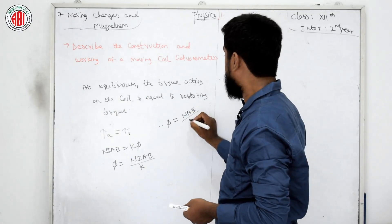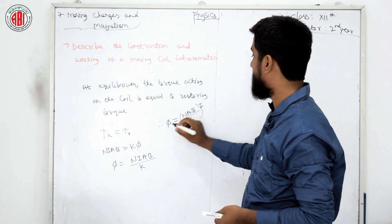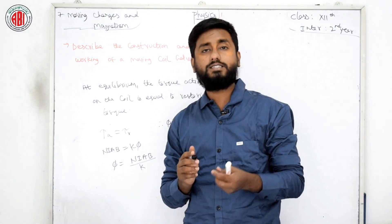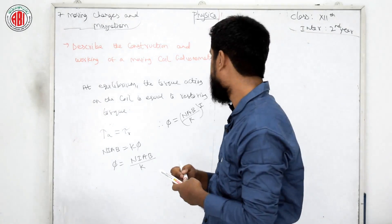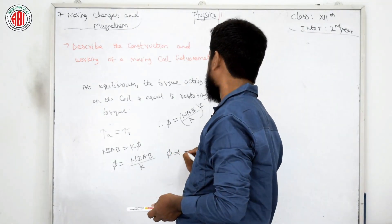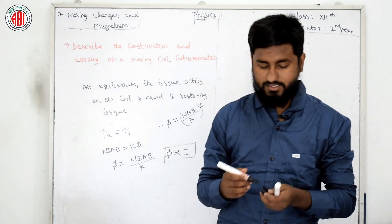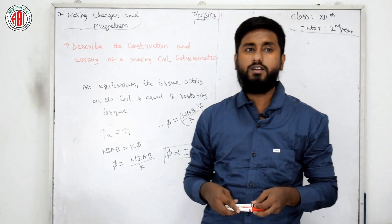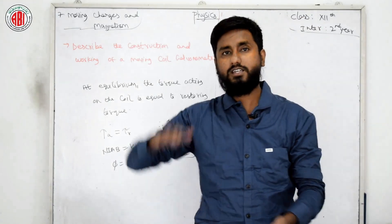Hence the deflection of the coil is directly proportional to current flow. We can say that phi is directly proportional to I. This is the final answer. This is one of the important topics you need to write, learn, and remember. That's all about our today's class. We will continue in the next session. Thank you.